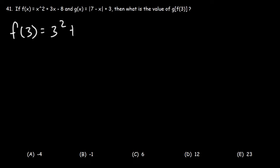So it's going to be 3 squared plus 3 times 3 minus 8. 3 squared is 9, 3 times 3 is also 9. Now, 9 minus 8 is 1. So we have 9 plus 1, which is 10. Thus, f(3) is equal to 10.